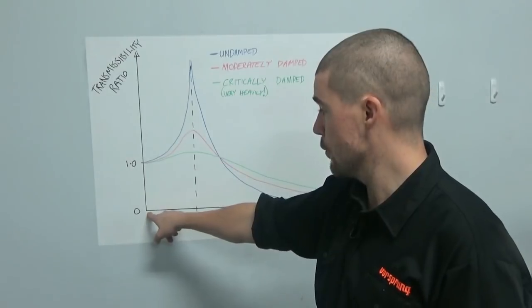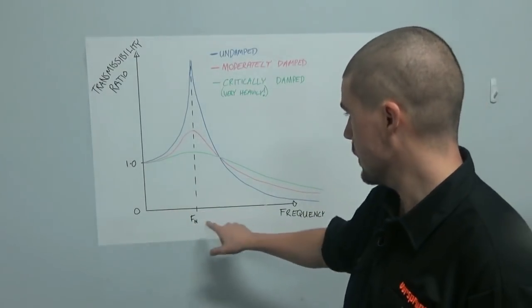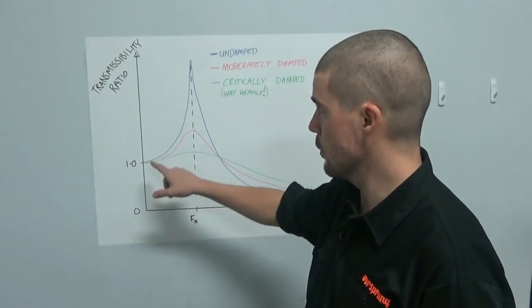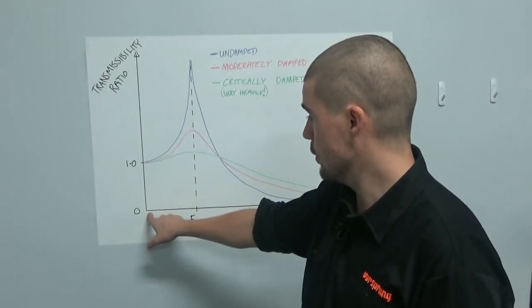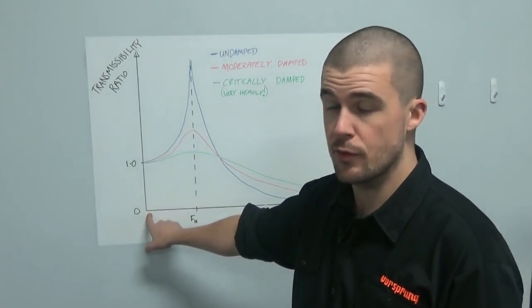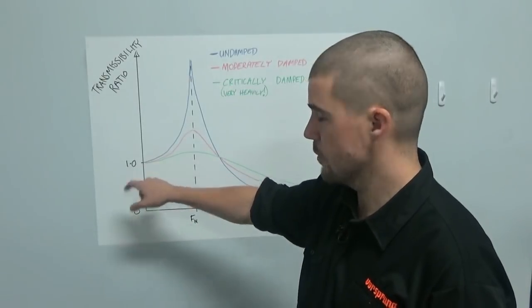So the input at very low frequency, so this is frequency on the x-axis, transmissibility on the y, transmissibility ratio on the y-axis. At zero frequency, so very, very slow movements, the ratio starts at one.